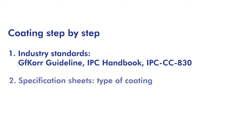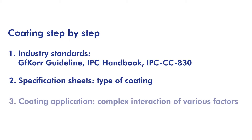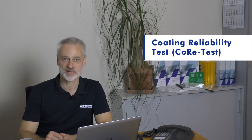First, you will choose the type of coating which fits best for the operational conditions of your assembly. For this, you use the specification data sheets from the manufacturers. The coating application itself is a complex interaction between material, machine, and the flash-off as well as the drying process. To prove the reliability of the coating process and therefore the reliability of the assembly, the GF-Core guideline recommends the Coating Reliability Test.